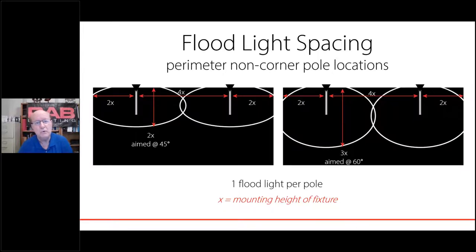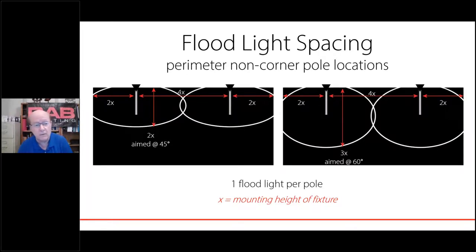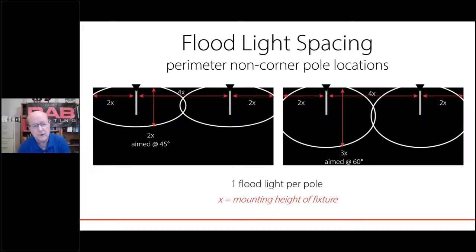Moving away from ground mounting to poles — using the most popular fixture, a wide angle floodlight. For non-perimeter pole locations, you'll see a spacing of 2X, where X is the mounting height. If you aim that floodlight at 45 degrees — which is the most popular and typical aiming from a pole — it covers 2X to the left and 2X to the right, for a total pole spacing of 4X. If you raise the aim up to 60 degrees, you may stretch that to 3 times the mounting height.